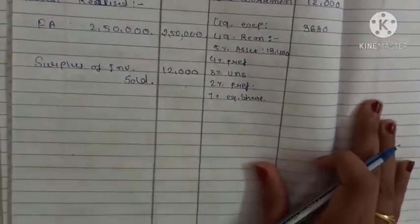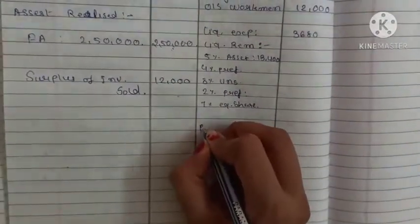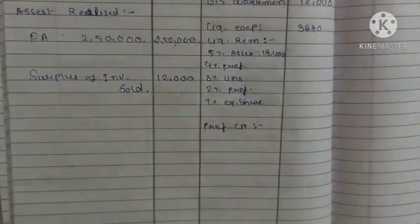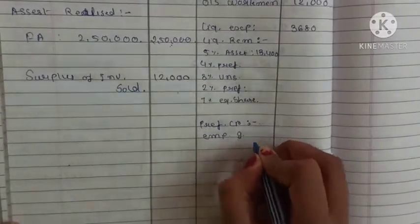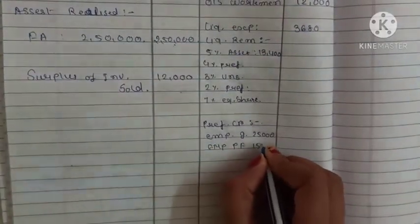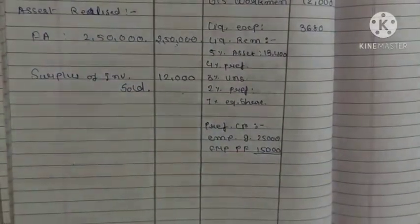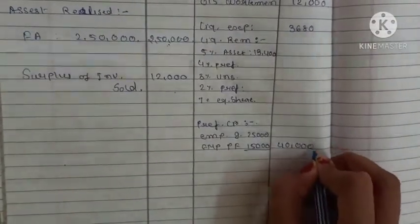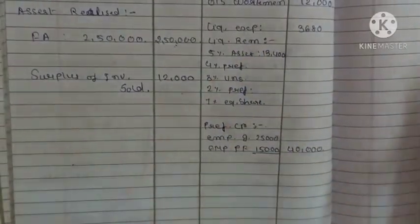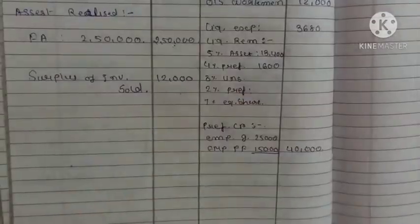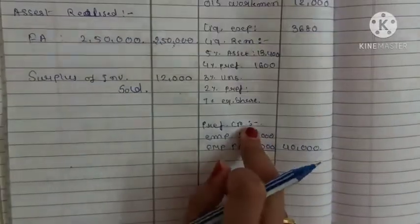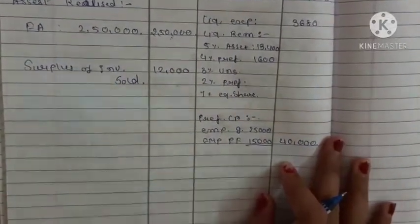After liquidator's remuneration, we pay preferential creditors. Preferential creditors include employees' salary (gratuity) 25,000 and employees' provident fund 15,000 as given in additional information. So 25,000 + 15,000 = 40,000 for preferential creditors. On 40,000 at 4% remuneration = 1,600 will be paid as remuneration to the liquidator. Then after preferential creditors comes the creditor with floating charge, that is debentures.